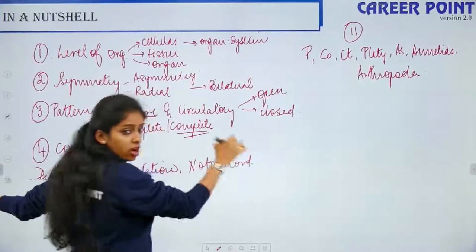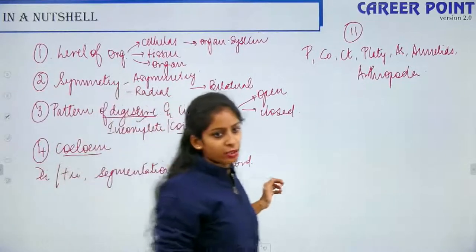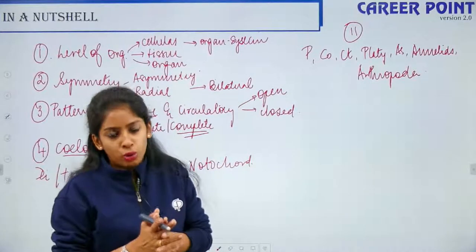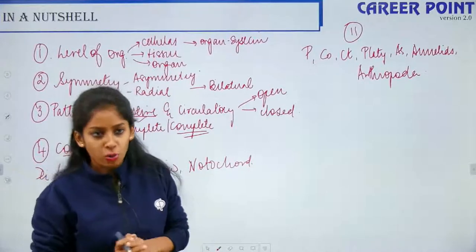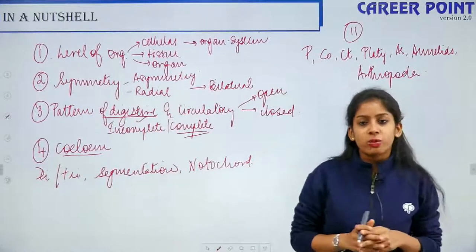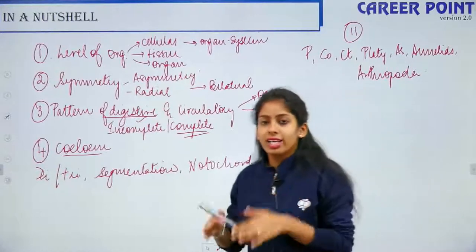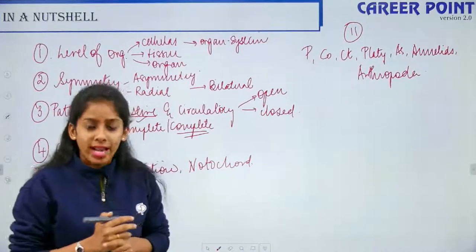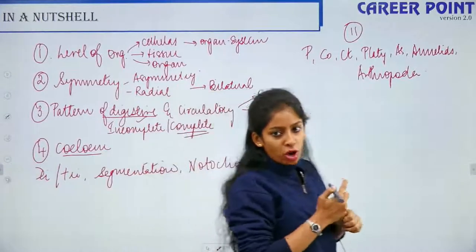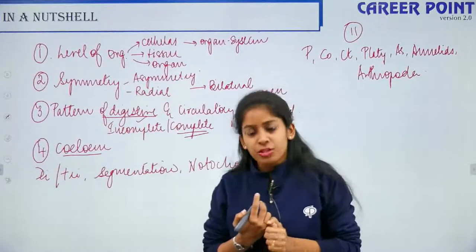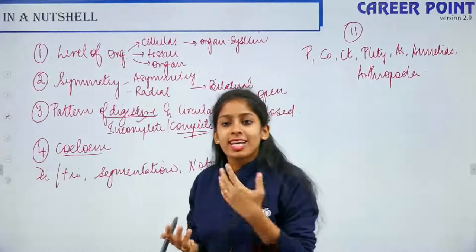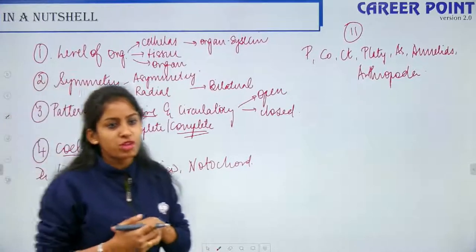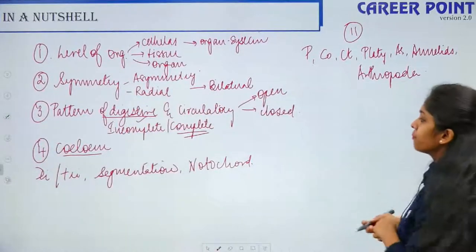As we go up the hierarchy, the level of organization also increases. We also spoke about diploblastic or triploblastic organization, segmentation and metamerism, and finally about the notochord — only chordates possess a notochord. All others are non-chordates and do not have a notochord.